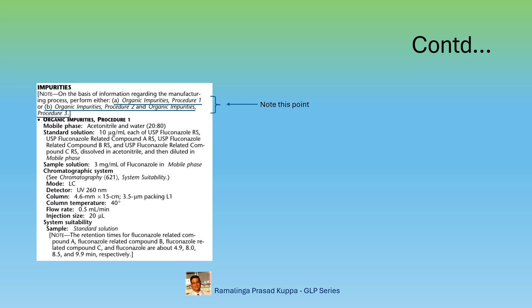In this impurities section, note this point. Depending upon the potential impurities based on the route of synthesis, either A or B must be done. In your SOP, you may have to declare this based on the potential impurities of the process adopted at your site.